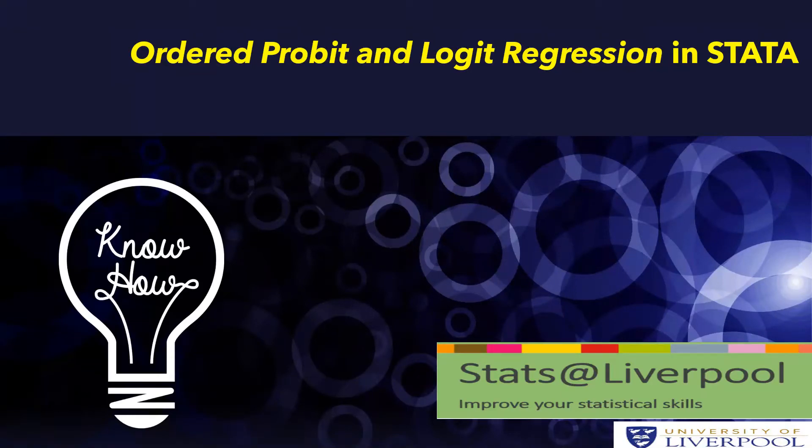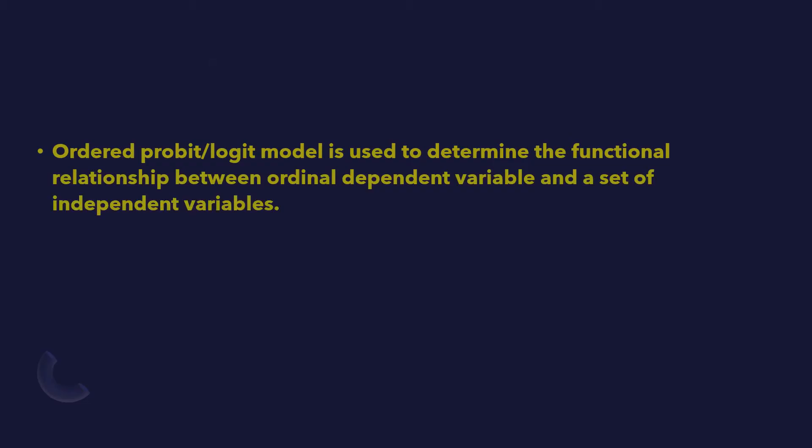Ordered probit and logit regression in Stata. The ordered probit or logit model is used to determine the functional relationship between an ordinal dependent variable and a set of independent variables. That means the dependent variable is a categorical variable which has more than two groups and can be sorted in a meaningful order.